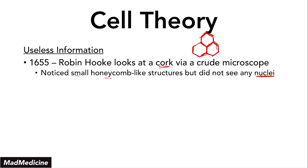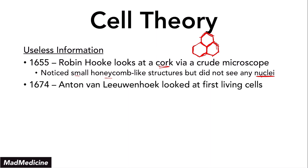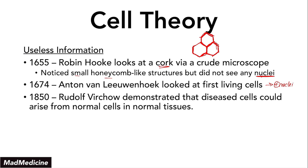This was a very crude understanding at the time — we didn't know what was really going on. It wasn't until 1674 that Anton van Leeuwenhoek actually looked at the first living cells and was able to see that these cells had nuclei. Then, in 1850, Rudolf Virchow demonstrated that disease cells could come from normal cells in normal tissue. This was very important because it gave us a better understanding of cells, and from there our understanding of how cells can lead to disease rapidly grew. And so cell theory was born.